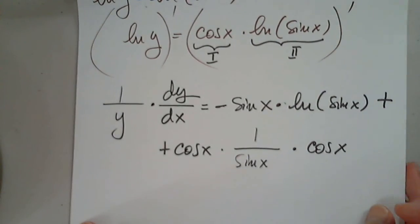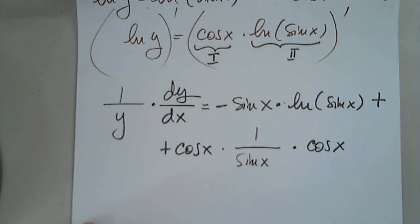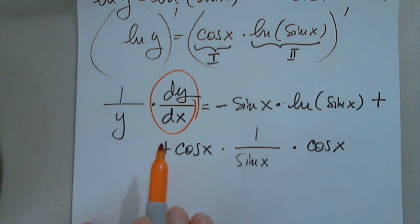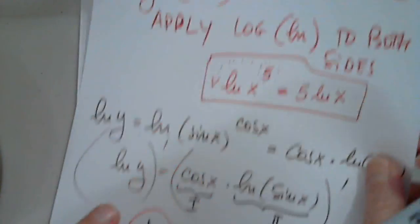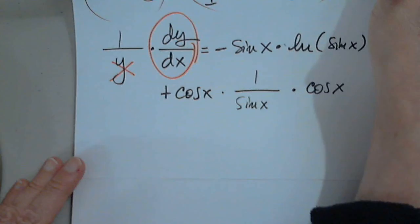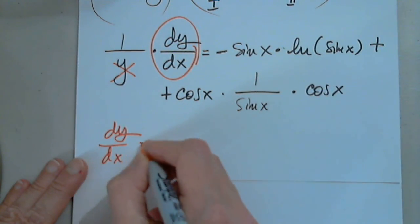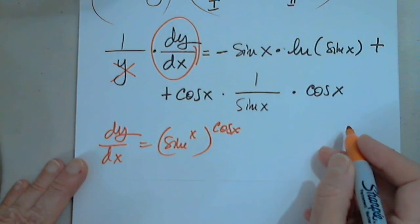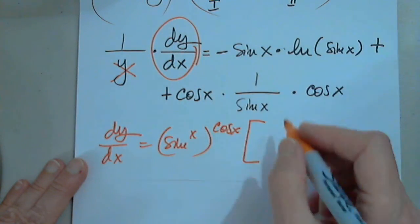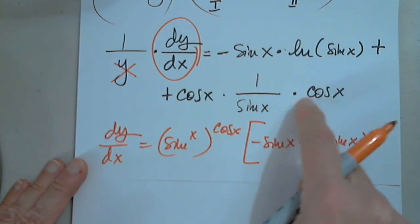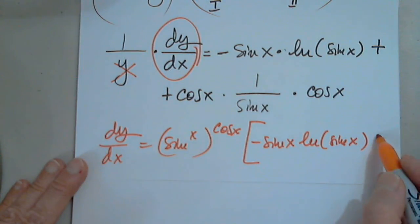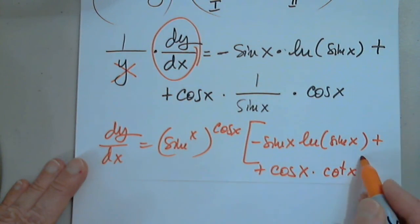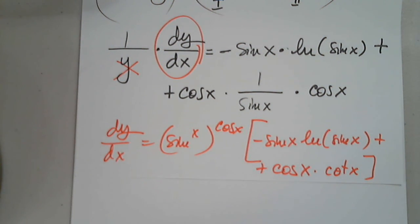What am I solving for? dy over dx. To isolate it, I multiply both sides by y, but I substitute y back as sine x raised to cosine x. So dy over dx equals sine x raised to cosine x, times the quantity negative sine x times natural log of sine x, plus cosine x times cosine over sine, which simplifies to cotangent x. So the result is sine x to the cosine x times negative sine x natural log of sine x plus cosine x times cotangent x.